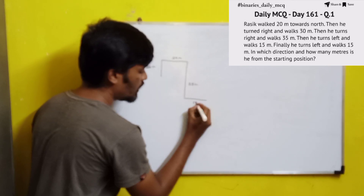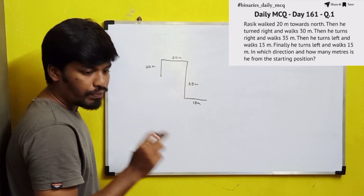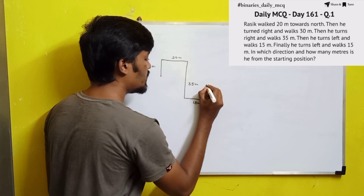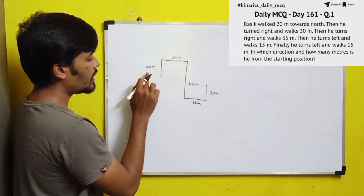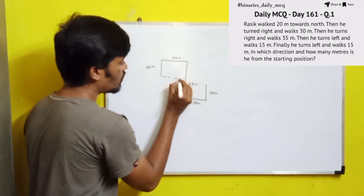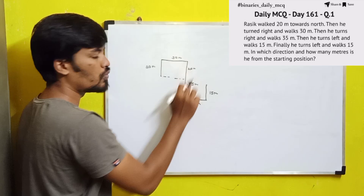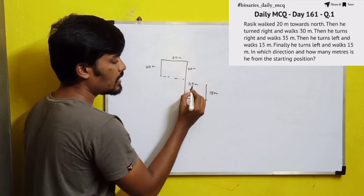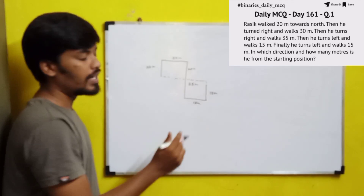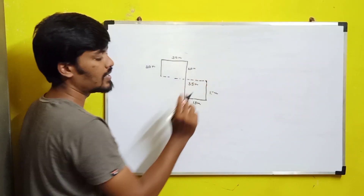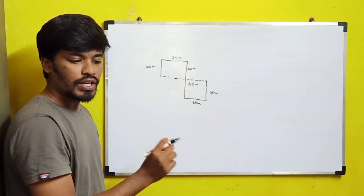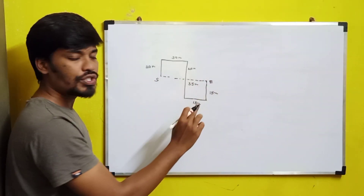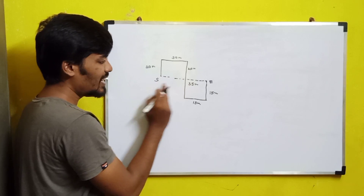So 15 meters he is walking, and finally he turns left and walks 15 more meters. This is the last position. Here 30 meters, here 20 meters — 20 meters is going to form a square-like path. The total distance in one direction is 35 meters, so this will be 15 meters and this 15 meters will be on the same line. This will be the last position where he has traveled. We have to identify in which direction and how many meters from the starting point. He is in the east direction.